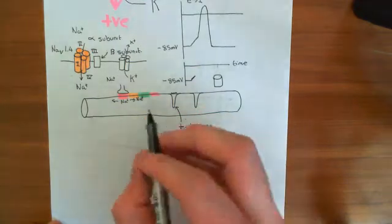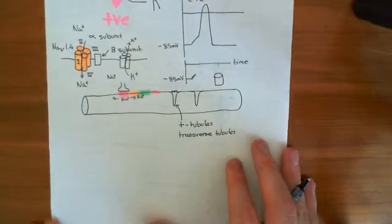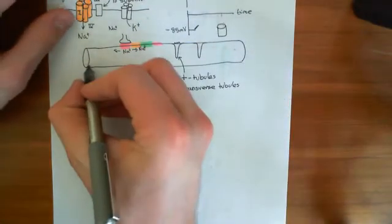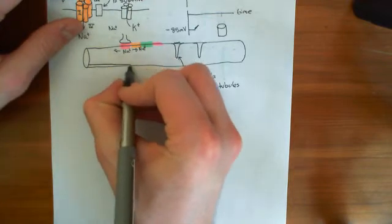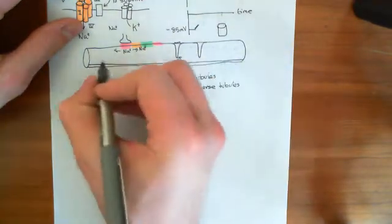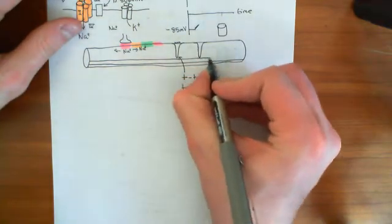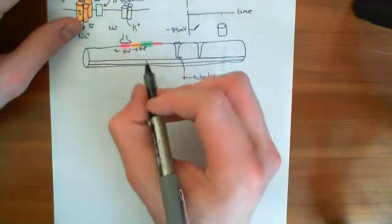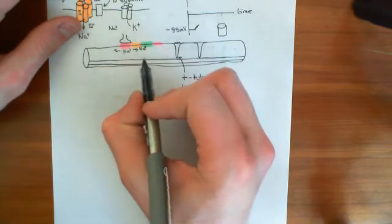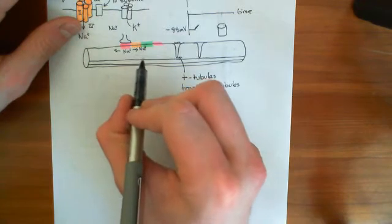We've already discussed that in myofibres, you have loads of structures known as myofibrils. So this myofibre is going to contain loads of myofibrils — loads of these chains of sarcomeres. Basically, the action potential is going to trigger — and we're going to see exactly how — it's going to trigger the sarcomeres to start contracting.